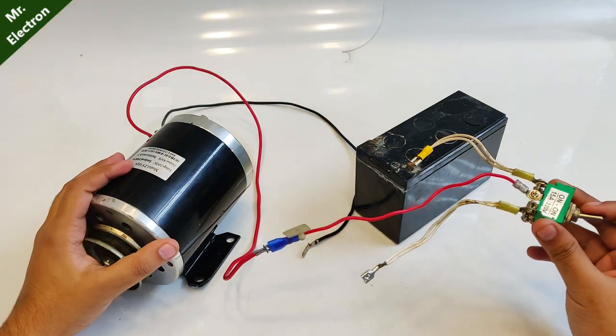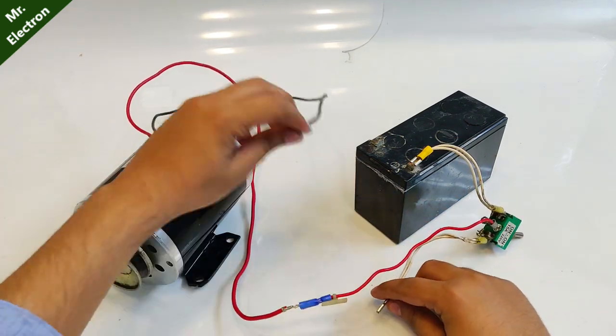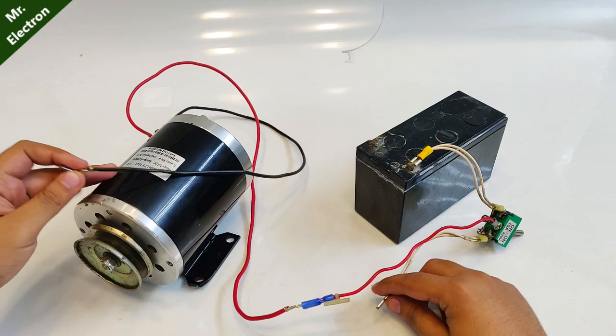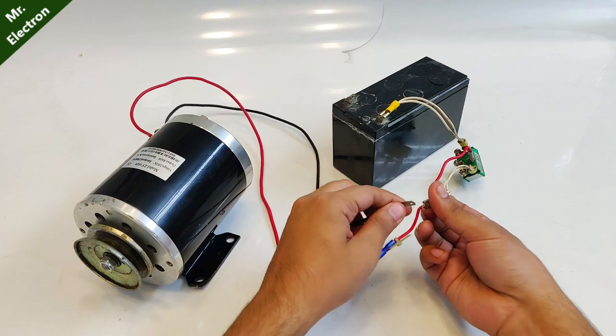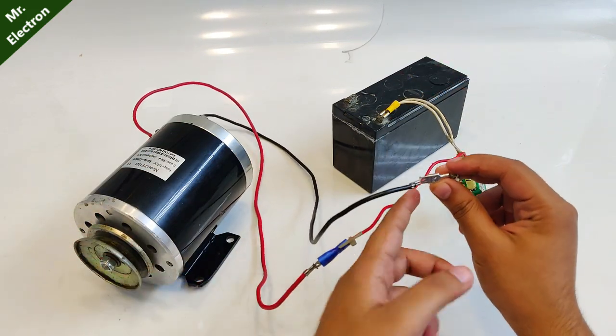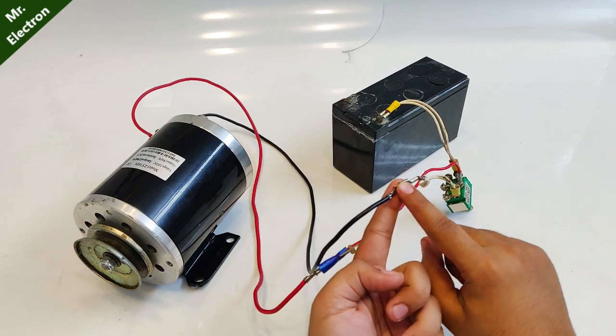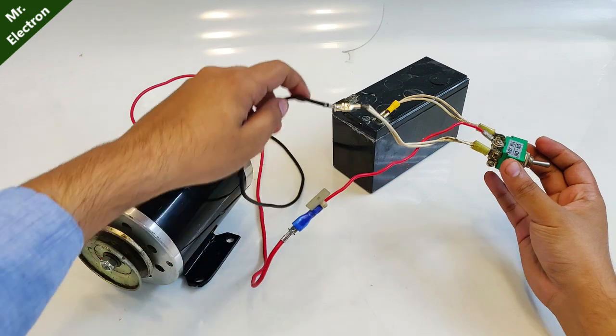So now comes the stopping part, the instant dead stopping part. For that, take the other terminal of this DC motor and the other left out terminal from the switch and connect them together like this. But one terminal from the battery has been left out. This is the tapping point which will be connected to the battery positive terminal.